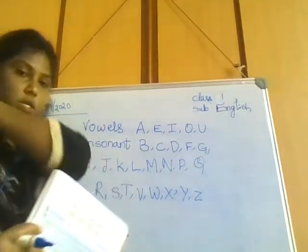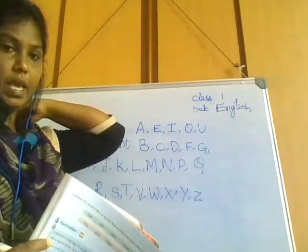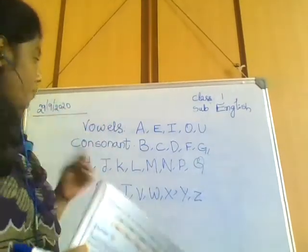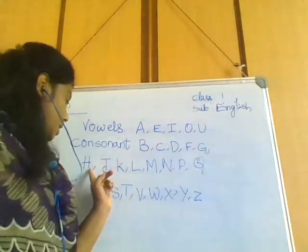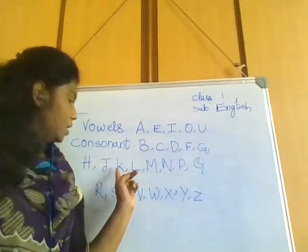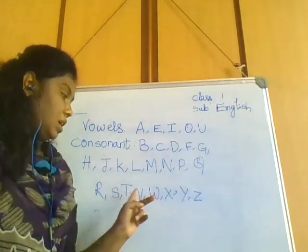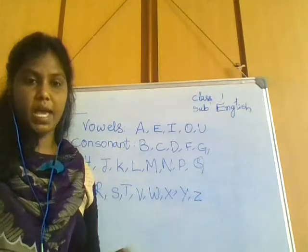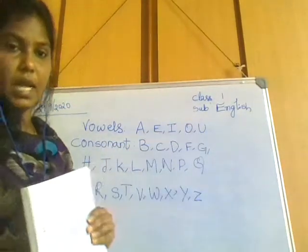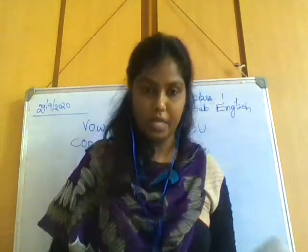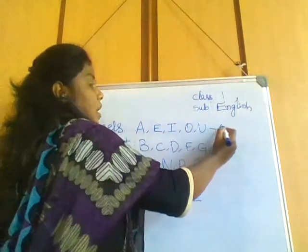So we have separated the vowels and the consonants. The vowels are A, E, I, O, U. The consonants are B, C, D, F, G, H, K, L, M, N, P, Q, R, S, T, V, W, X, Y, and Z. The vowels are 5. Shall we count the consonants?